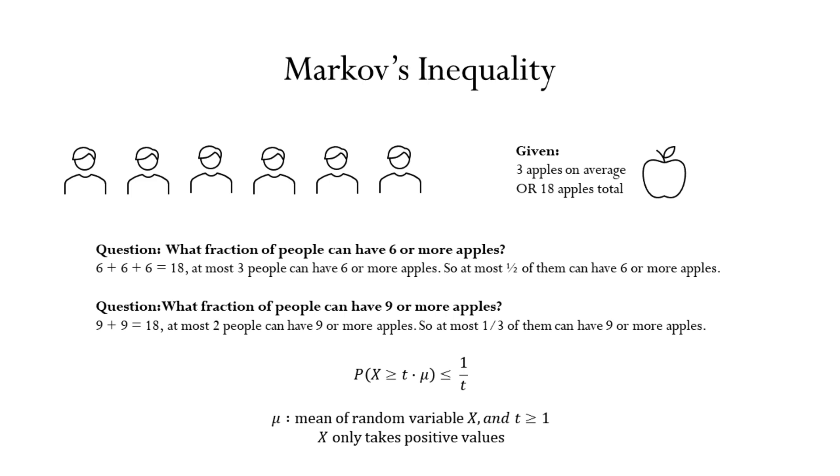Now consider this question. What fraction of people can have six or more apples? For example, everyone can't have six or more apples because if they did, the mean would not be three apples. It would be at least six.